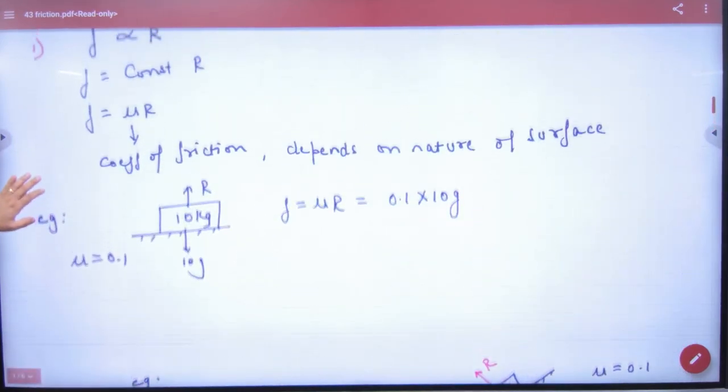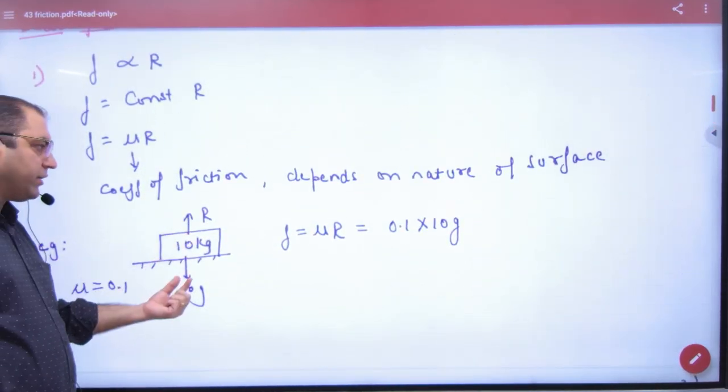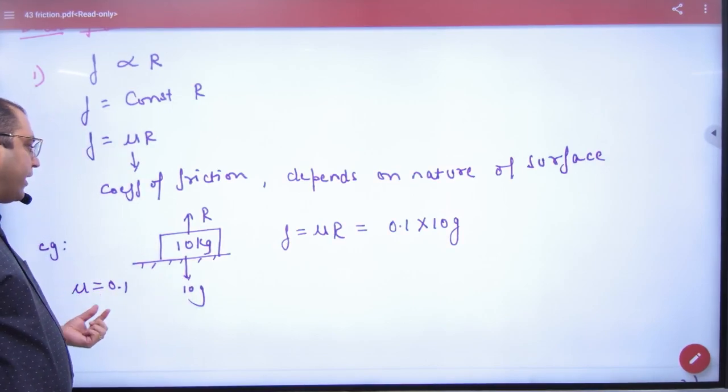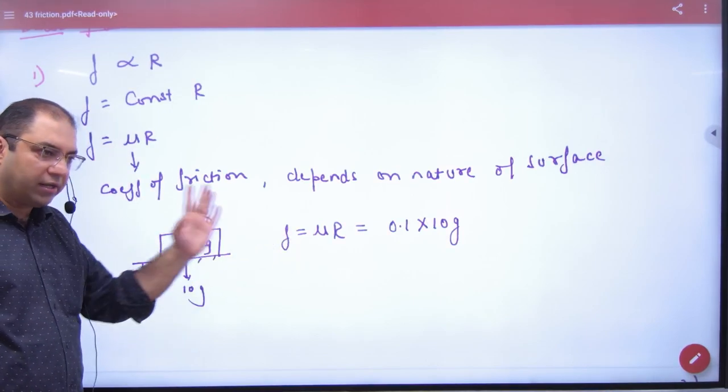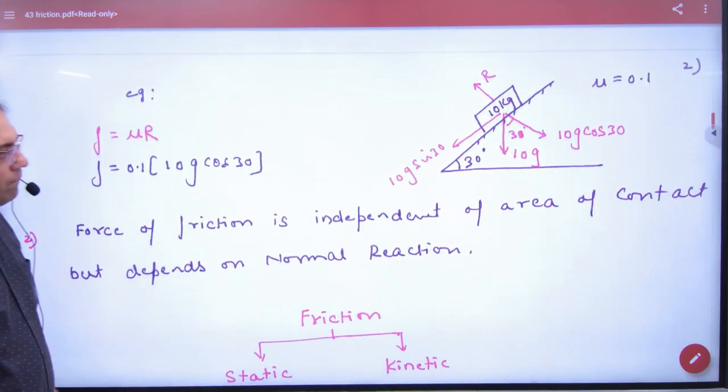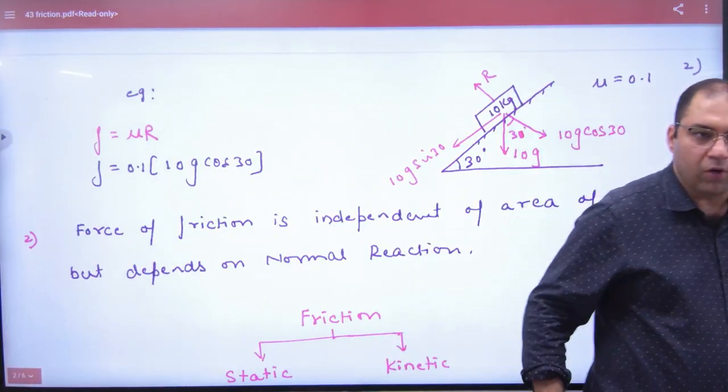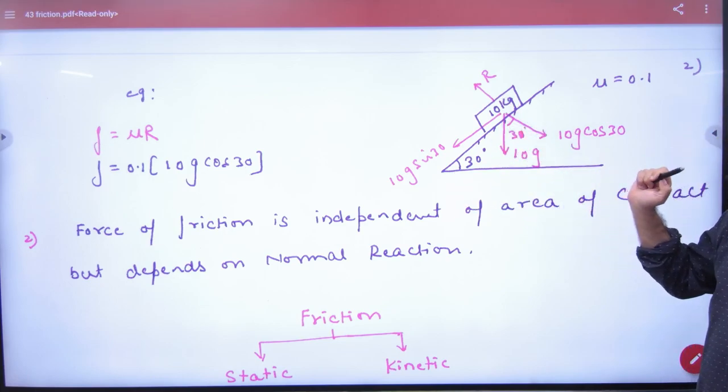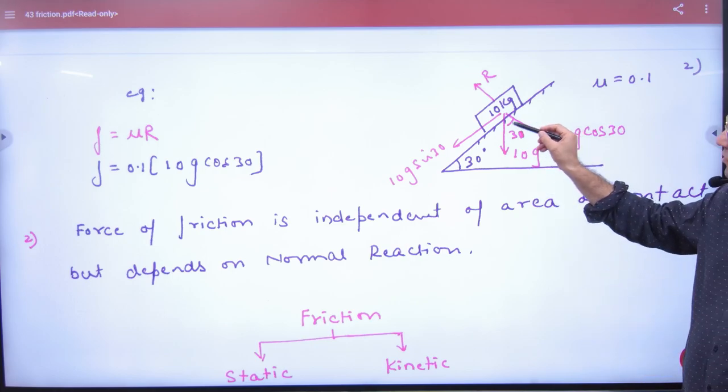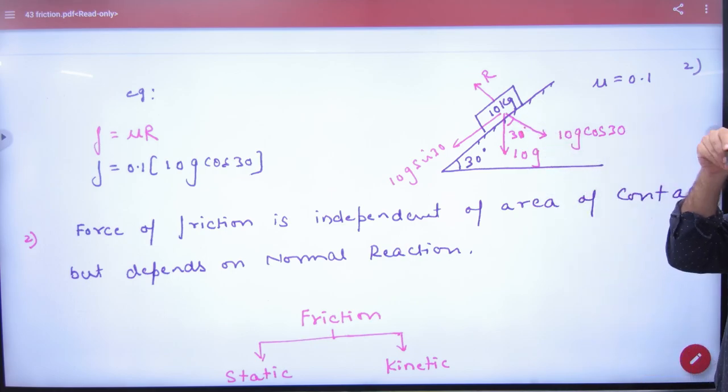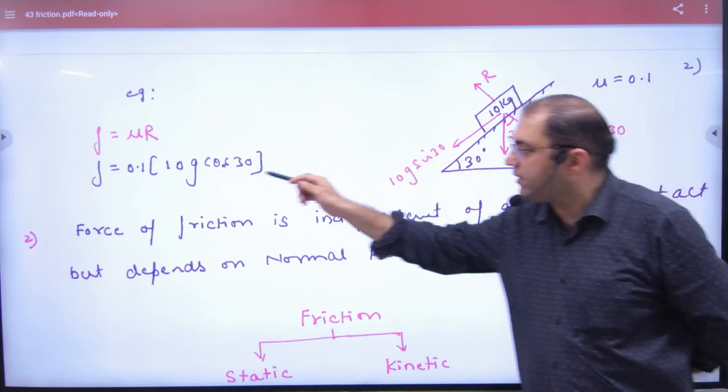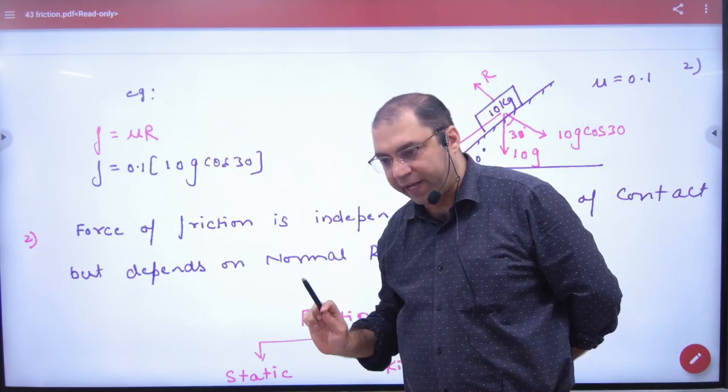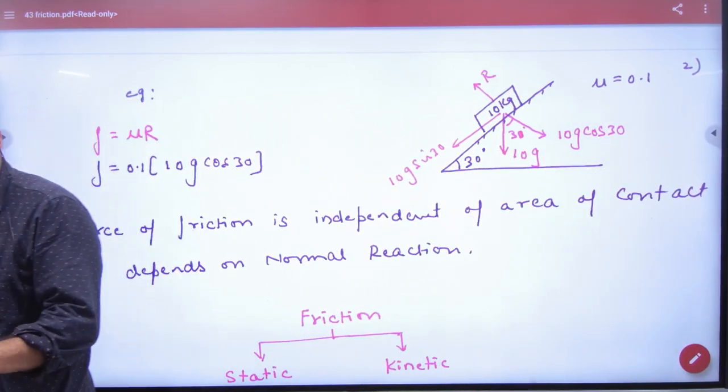So I have told you, force of friction: the normal reaction is 10G. So force of friction is mu times the normal reaction, 10G. I have told you, if a block is 10 kg, and the force is 10G sin 30 and 10G cos 30, then the normal reaction here is 10G cos 30. And if the surface has roughness mu equal to 0.1, then what will happen? 0.1 into the normal reaction. So this will be the force of friction.